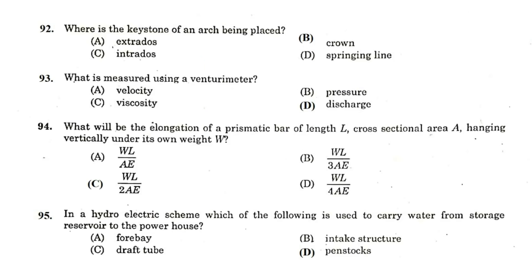Where is the keystone of an arch being placed? Crown. What is measured using a venturimeter? Discharge. What will be the elongation of prismatic bar of length L, cross-sectional area A, hanging vertically under its own weight W? WL by 2AE.